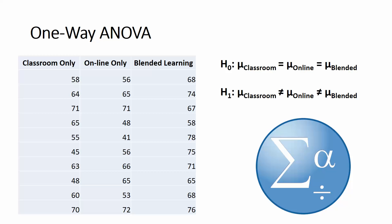Now before we start, let's take a look at some sample data. Let's say I want to run a course, and I've got three different options: I can run it in a classroom only, I can run it in an online environment only, or I can do a blend of both classroom and online. I'd like to test to see if there's a difference between test scores for students who have taken each of these three different types.